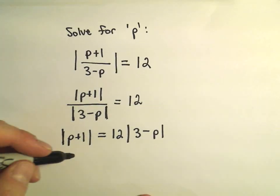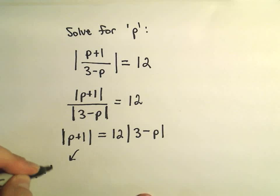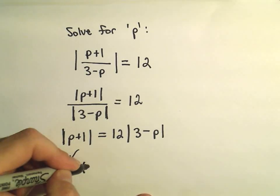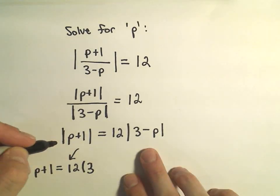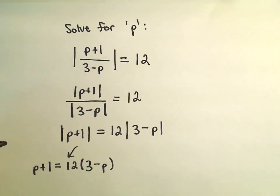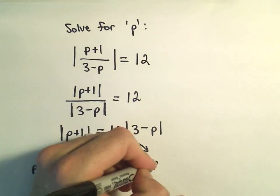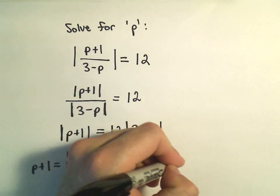At this point, what we do is we create two separate equations to solve. We take p plus 1 equals 12 times the quantity. We just basically remove the bars on both of them. You can imagine they're both in parentheses.